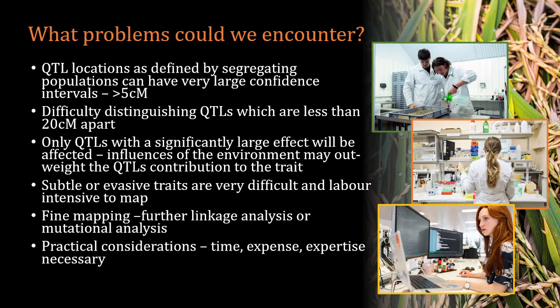It can also be really difficult to distinguish between QTLs which are less than 20 centimorgans apart, even when they have moderate heritability. You may accidentally interpret two QTLs within this range as just one. Also, once you've narrowed down an additive region of the genome, you will need to conduct fine mapping — which is extra work. Lastly, consider the practicality of this approach: it takes immense expertise, time, and expense for this approach to be successful.